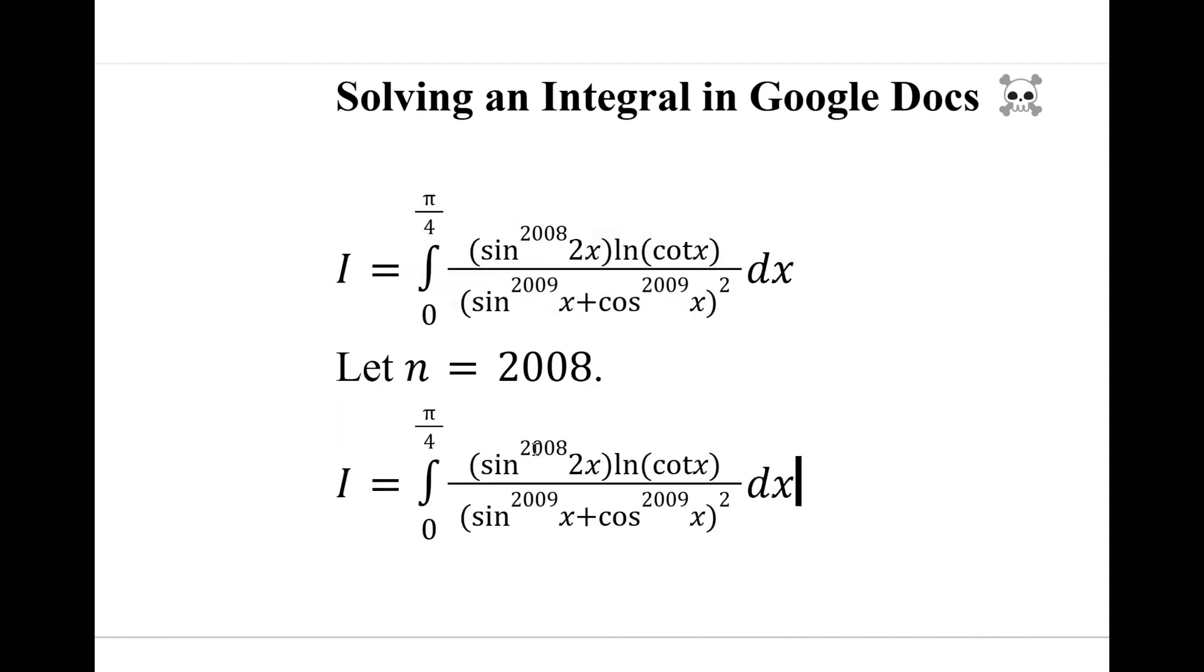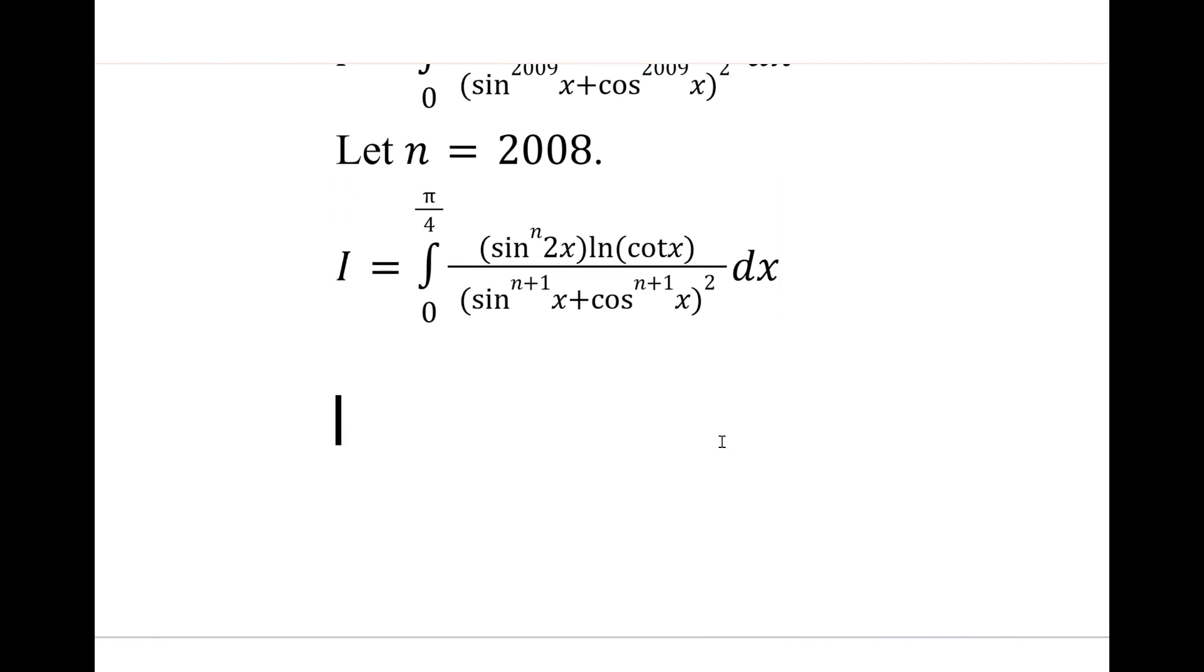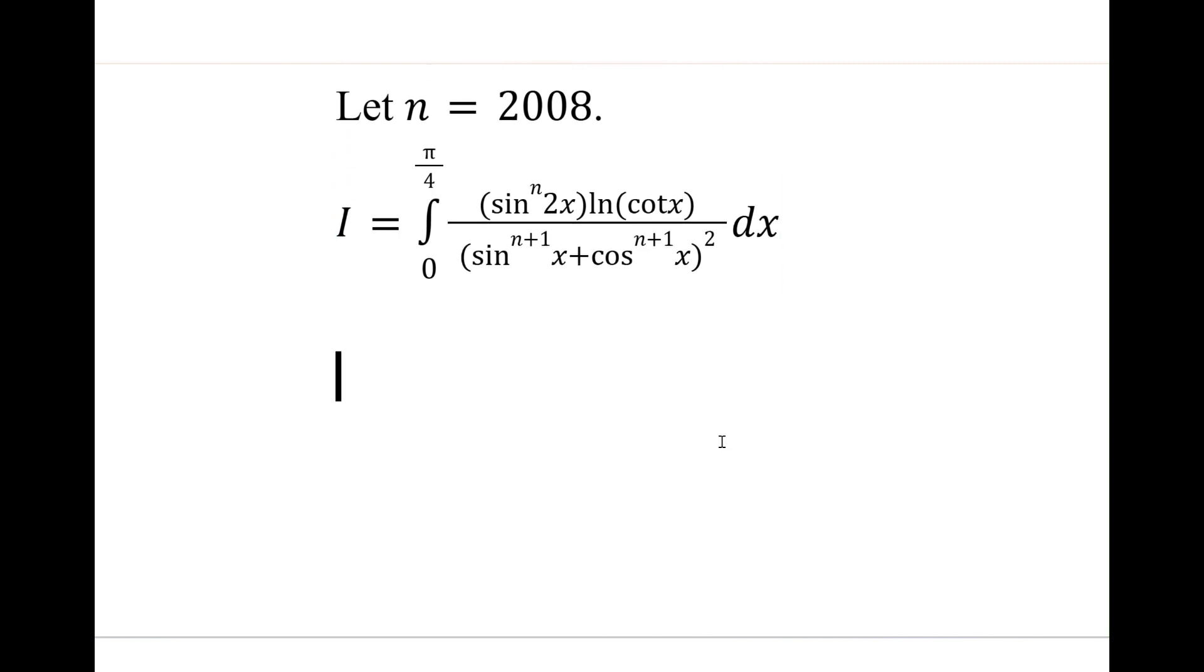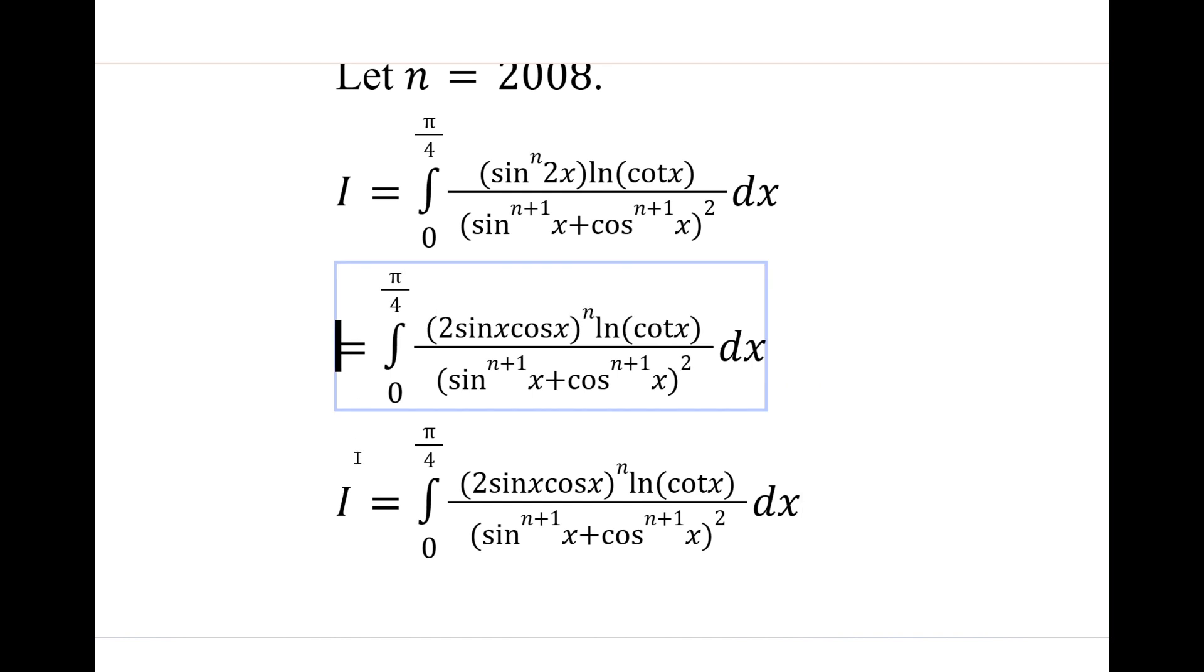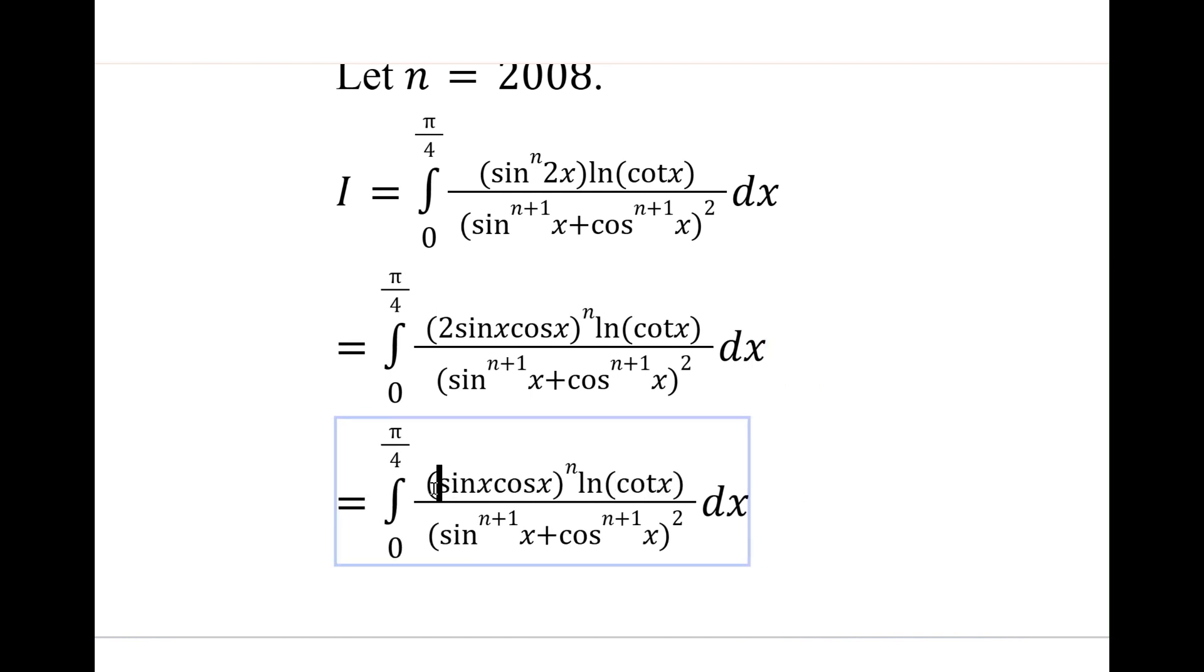Let's just rewrite the integral. So 2009 would be n plus 1. Now what's the first step? This sine 2x kind of reminds me of double angle, so might as well write this as 2 sine x cos x, and of course we're raising this to the nth power. We can take this 2 outside as 2 to the n and then we have sine to the n and then cos to the n.